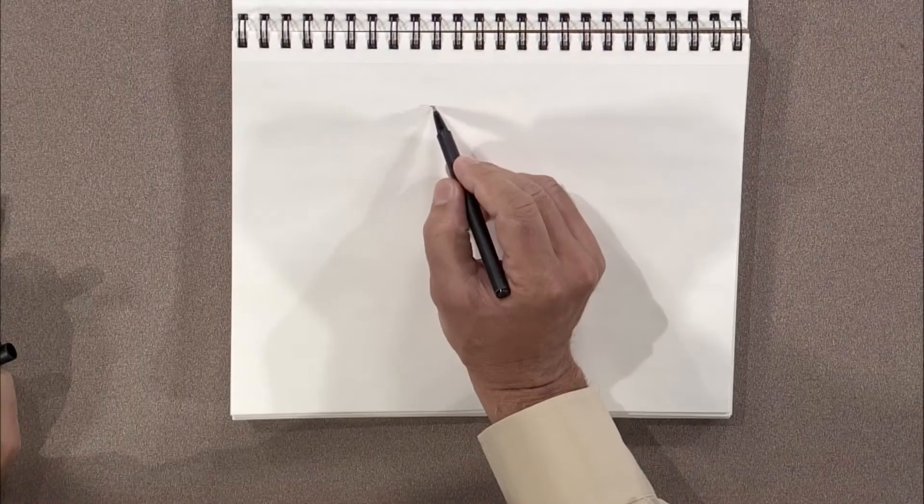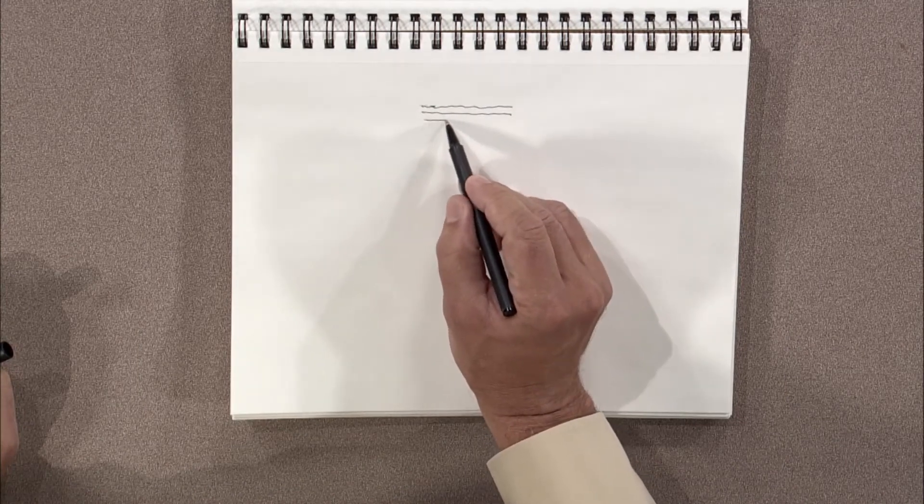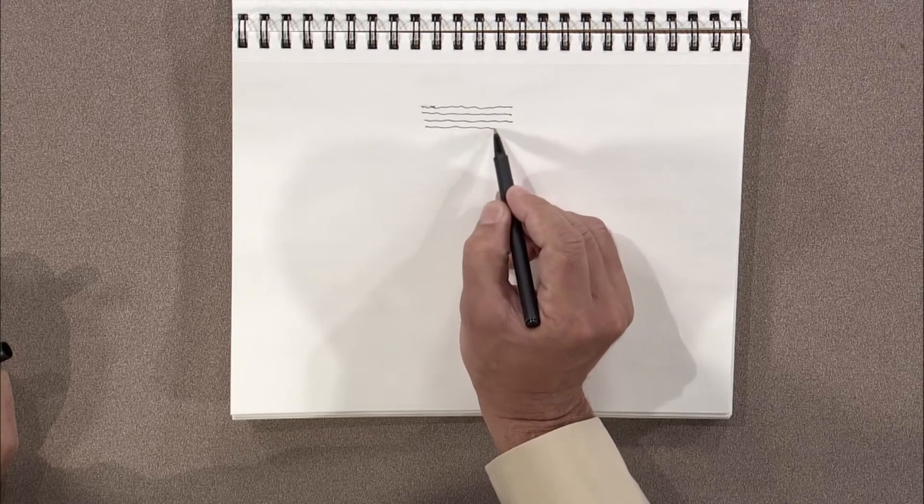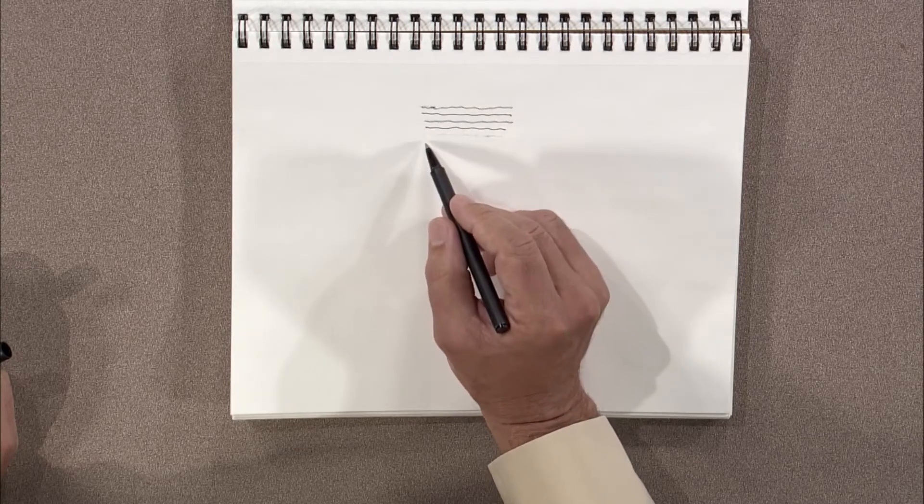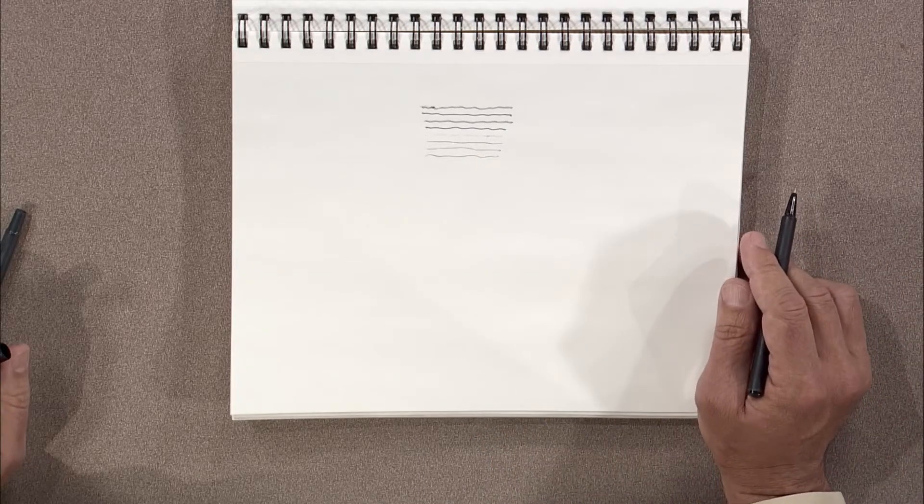With a rollerball, I can get one line weight. It's very hard unless I start trying to go real fast to get various line weights.